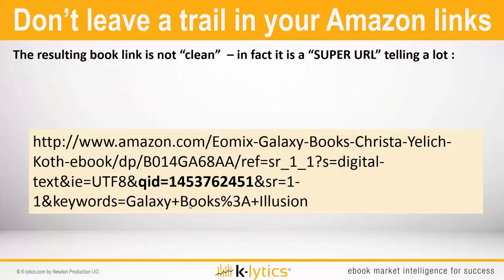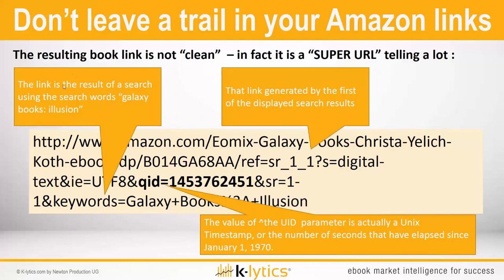Let me show you why. This URL actually tracks a lot of things. The book link is not clean — it's a so-called super URL, and it tells Amazon a lot. For example, first the link is a result of a search using the keywords 'galaxy books illusion,' or in the earlier example 'Krista Jelic illusion.' The link also shows the keywords used and that it was the result of a search.